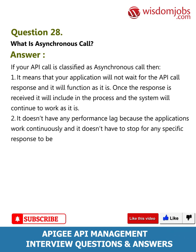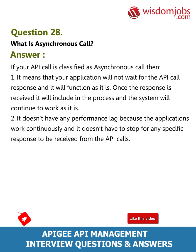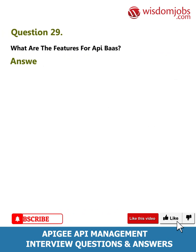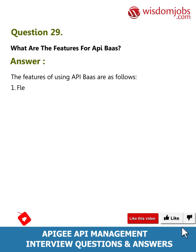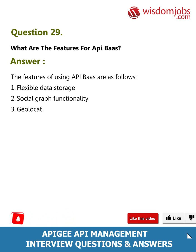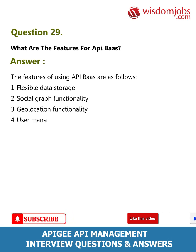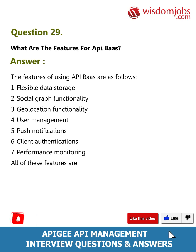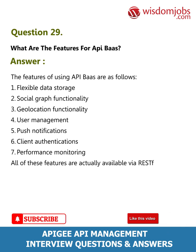Question 29: What are the features of API BaaS? Answer: The features of using API BaaS are as follows: one, flexible data storage; two, social graph functionality; three, geolocation functionality; four, user management; five, push notifications; six, client authentication; seven, performance monitoring. All of these features are available via RESTful API.